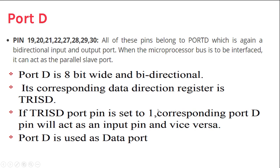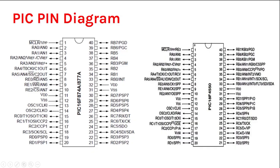Port D consists of pins 19, 20, 21, 22, 27, 28, 29, and 30 — 8-bit wide and bidirectional. It uses TRISD for the data direction register. Port D is used as a data port. Port B is from pins 33 to 40 — again 8-bit wide and bidirectional — using TRISB for data direction registers.